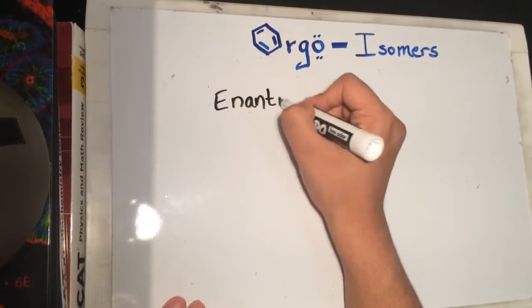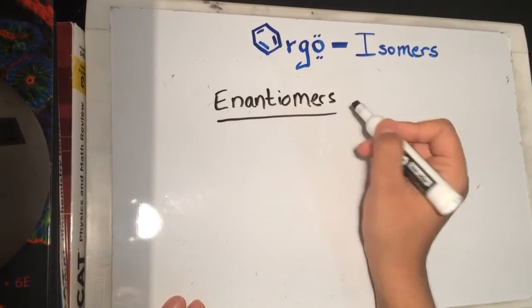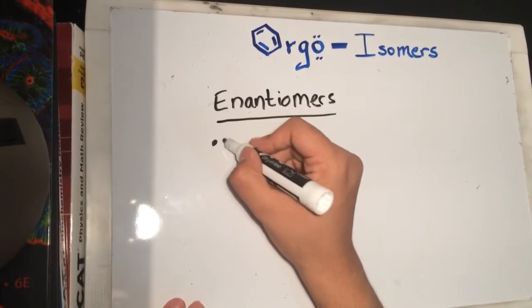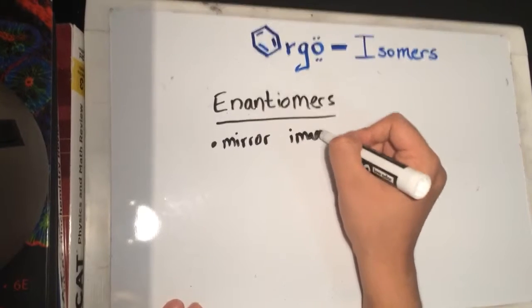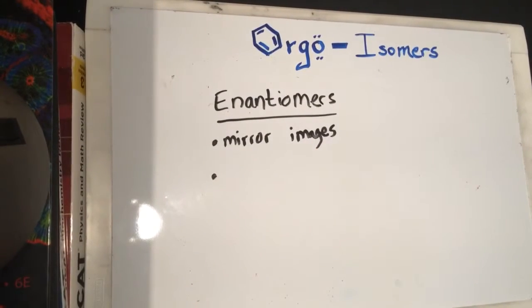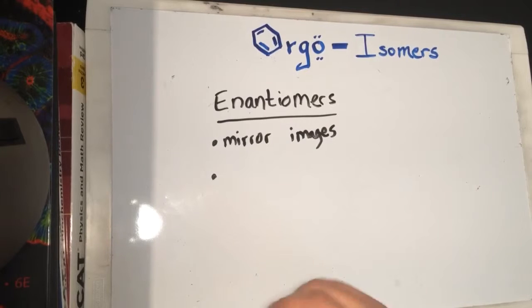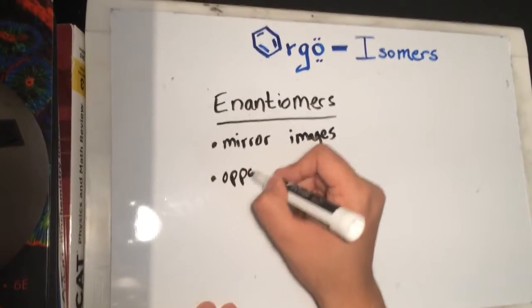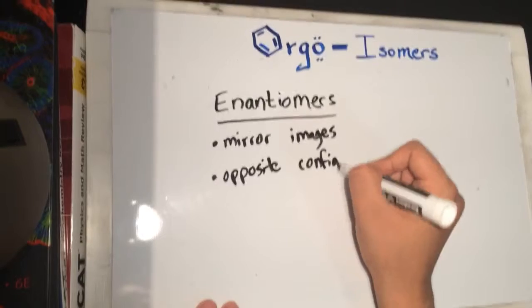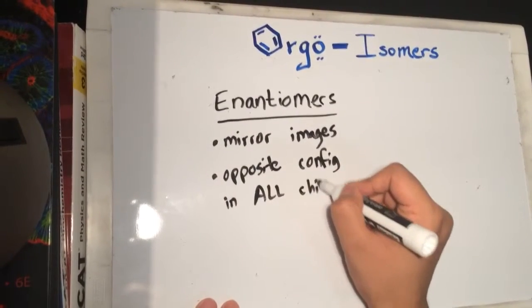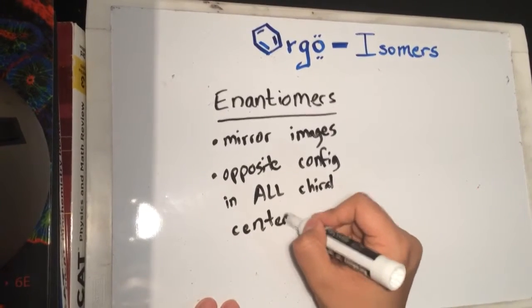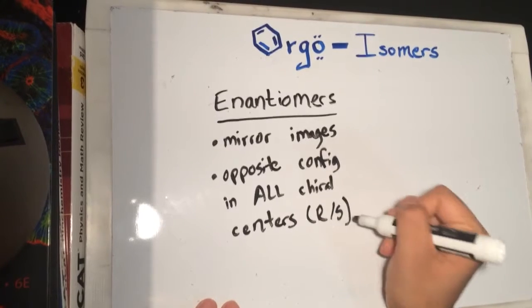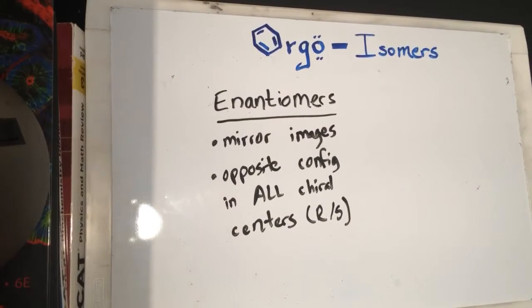Enantiomers and diastereomers are what most people get confused with. A few facts before examples: enantiomers — think of mirror images. Because they're enantiomers, if we're going to consider two molecules enantiomers, they should have opposite configurations in all their chiral centers. By configurations, I mean R and S configurations.